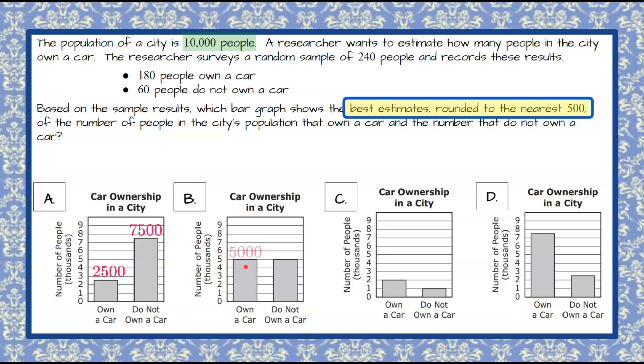Graph B, each bar is at 5,000 people. 5,000 and 5,000 is 10,000, so it could be bar graph B. C, we can already see that we have 2,000 people represented owning a car and 1,000 that do not. Bar graph C cannot be one of our answer choices because it only represents 3,000 people, not 10,000 people.